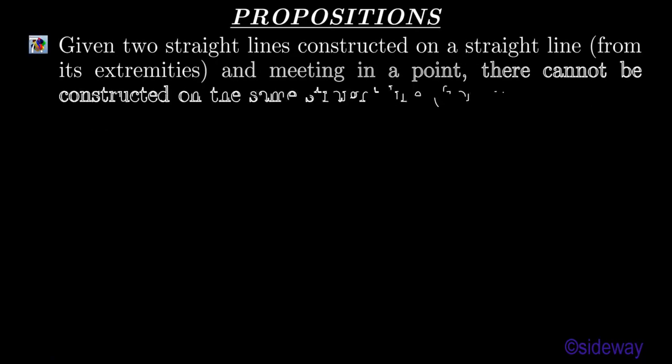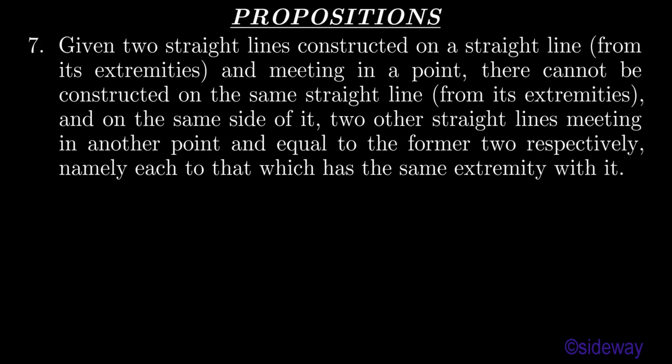Euclid's Elements, Book 1, Proposition 7. Given two straight lines constructed on a straight line from its extremities and meeting in a point, there cannot be constructed on the same straight line, from its extremities and on the same side of it, two other straight lines meeting in another point and equal to the former two respectively, namely each to that which has the same extremity with it.